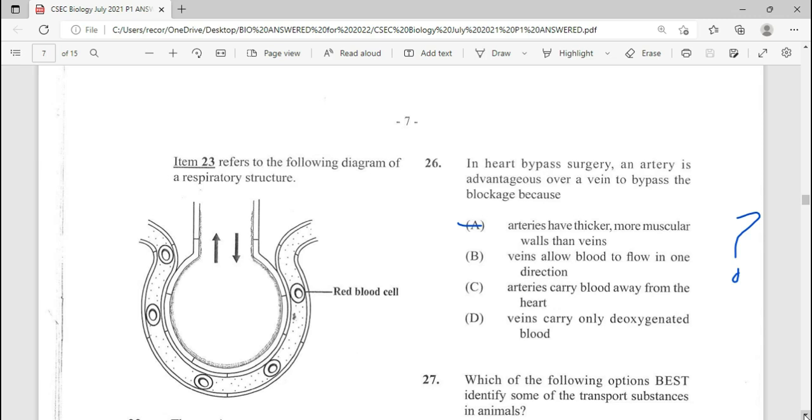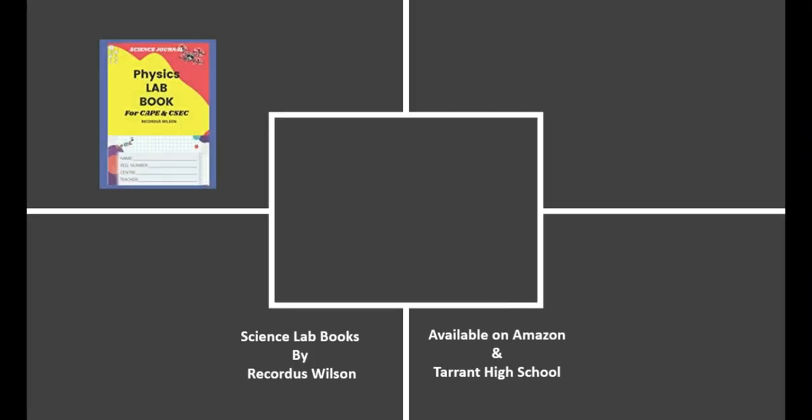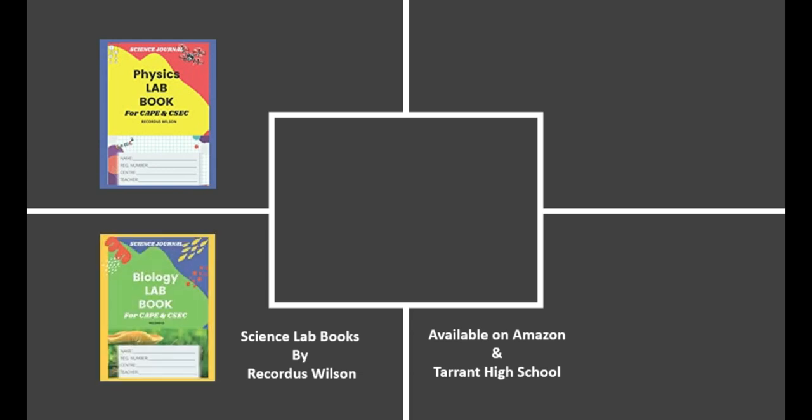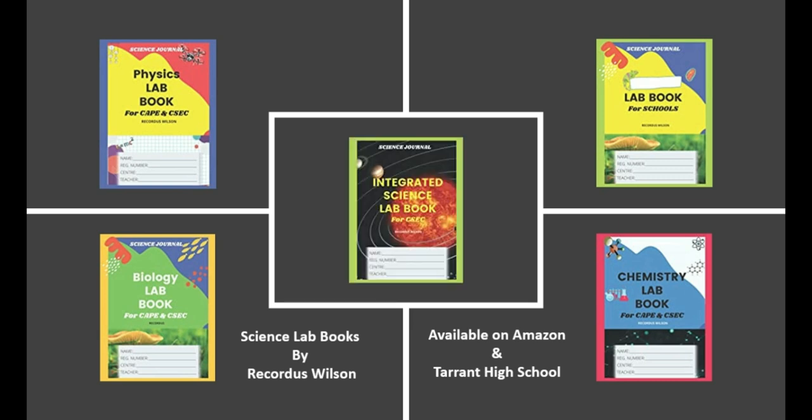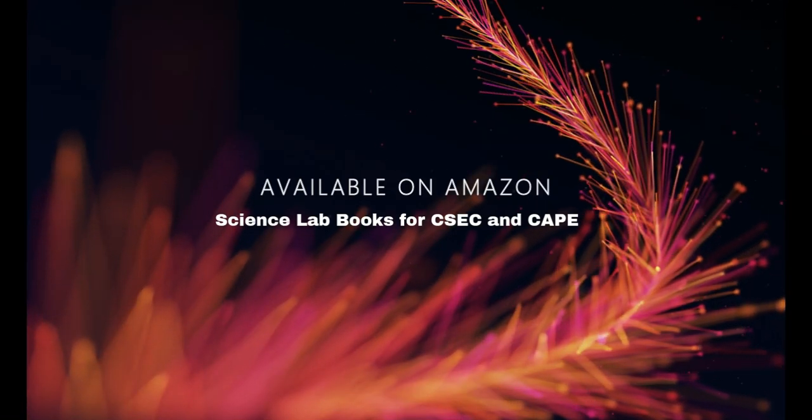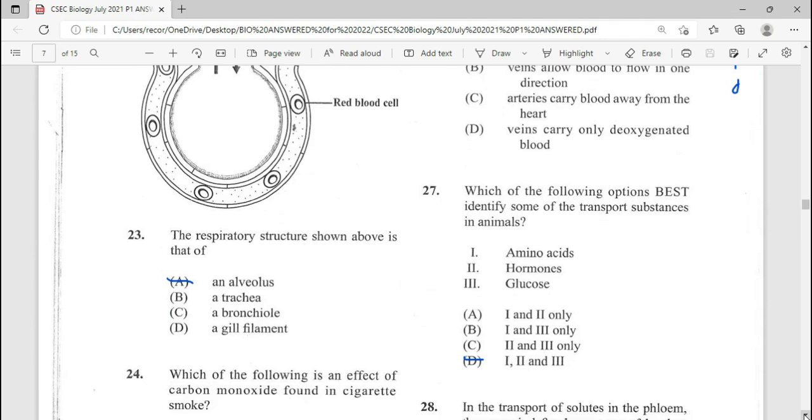26, in heart bypass surgery, an artery is advantageous over a vein to bypass the blockage because arteries have more muscular walls than vein. So the answer there is going to be A.